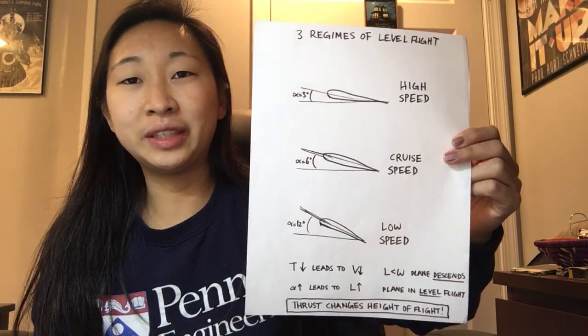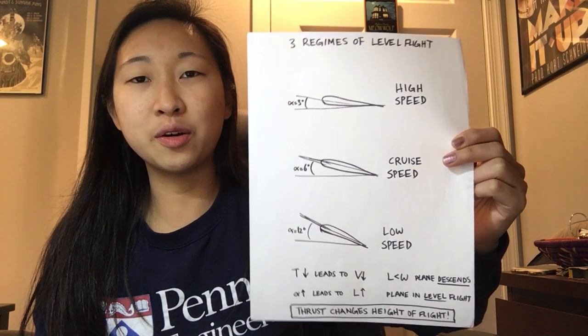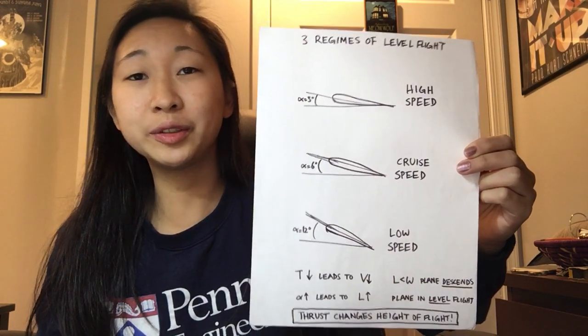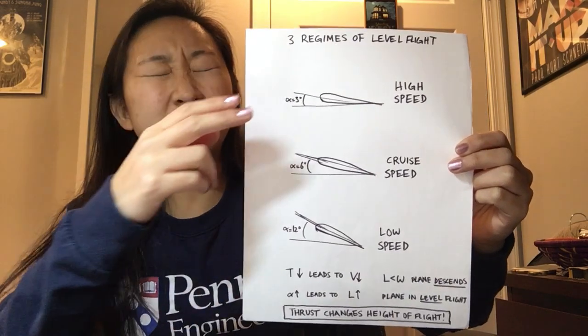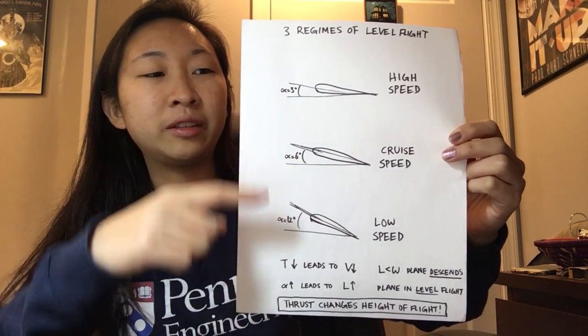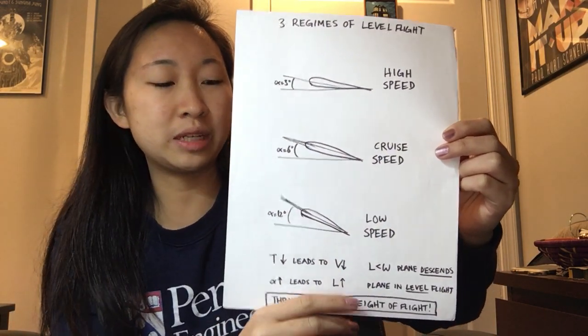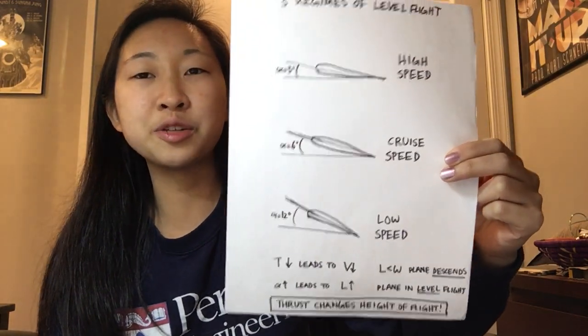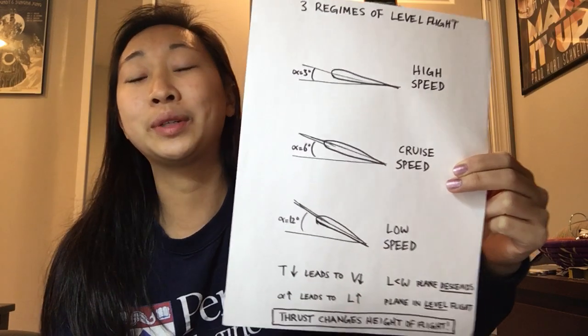There are three main regimes of level flight. And so this is where my professor said most students get confused. You can see at different angles of attack, there are different types of speeds. So let's assume you're at cruising speed and you want to speed up or slow down.